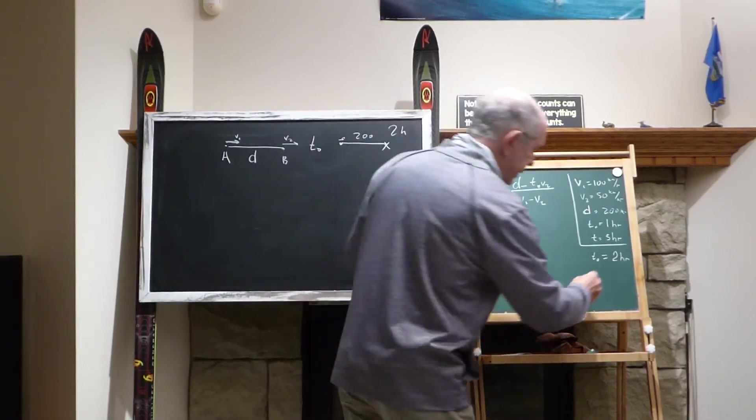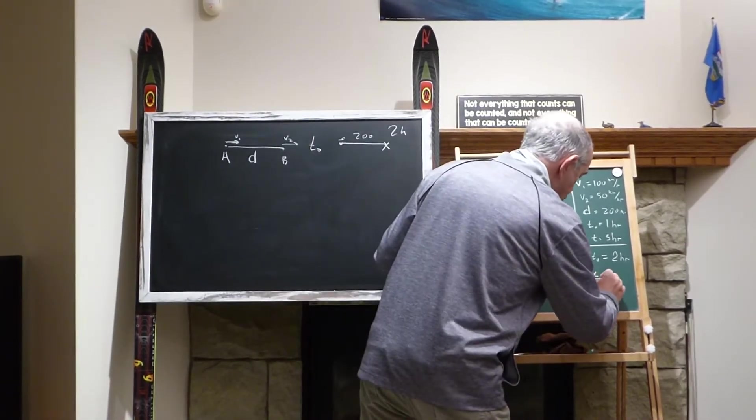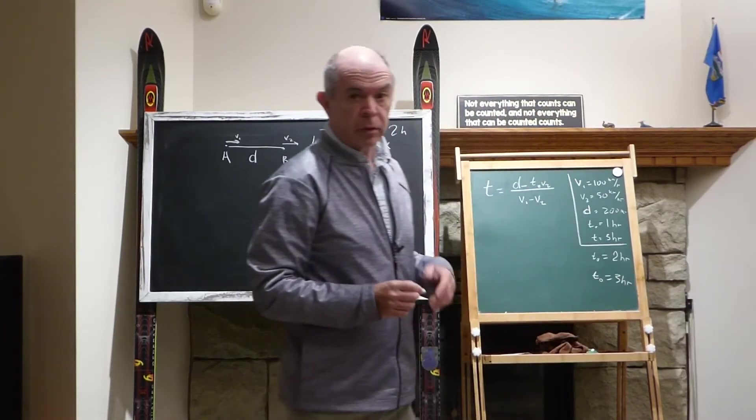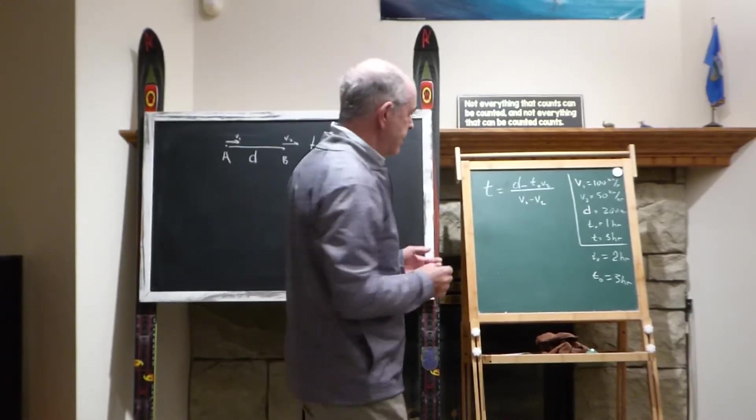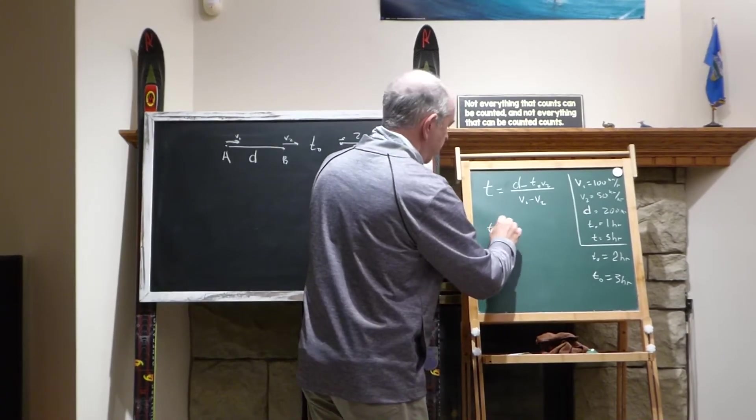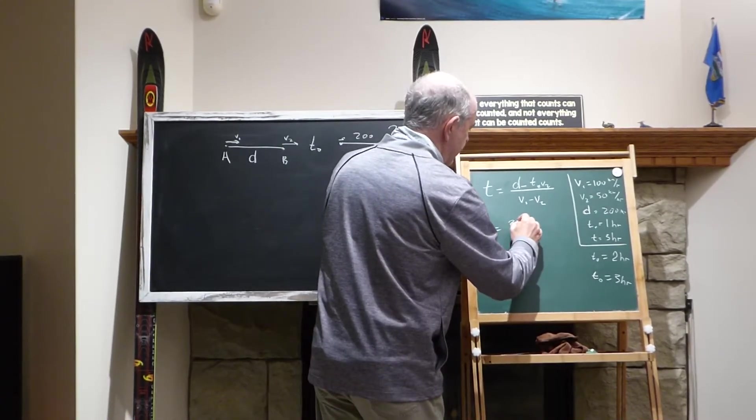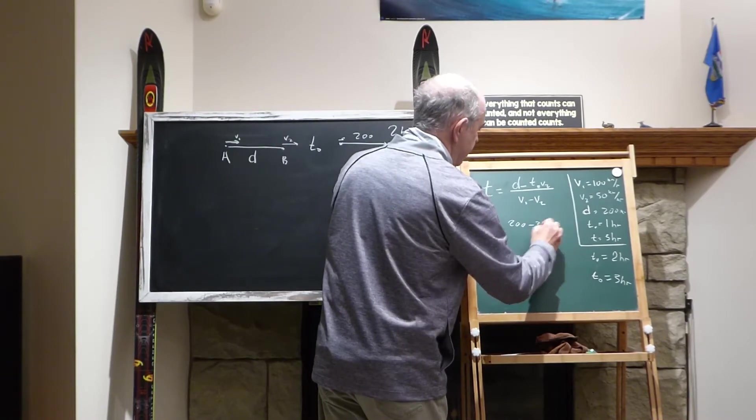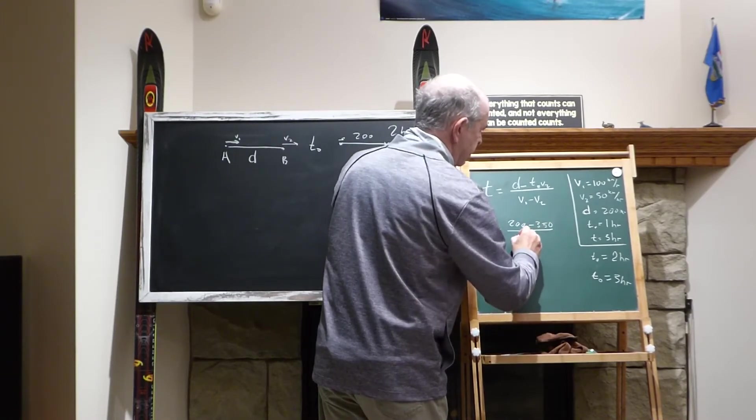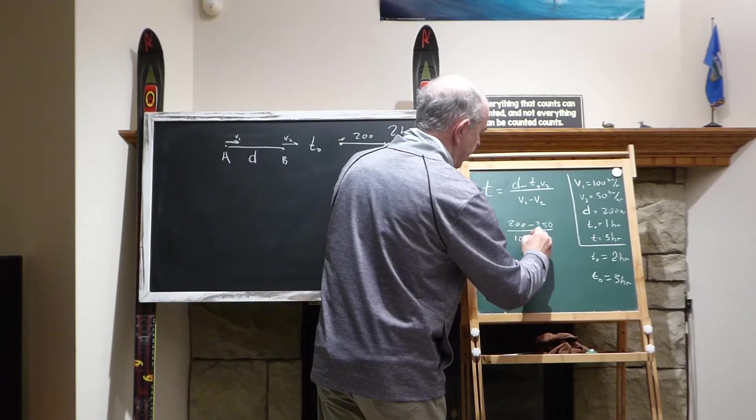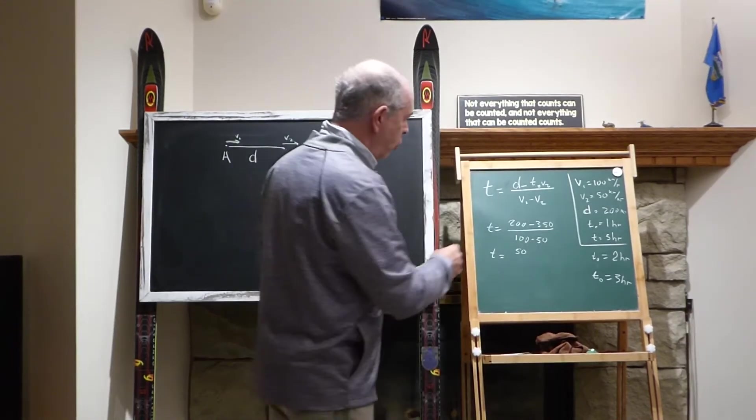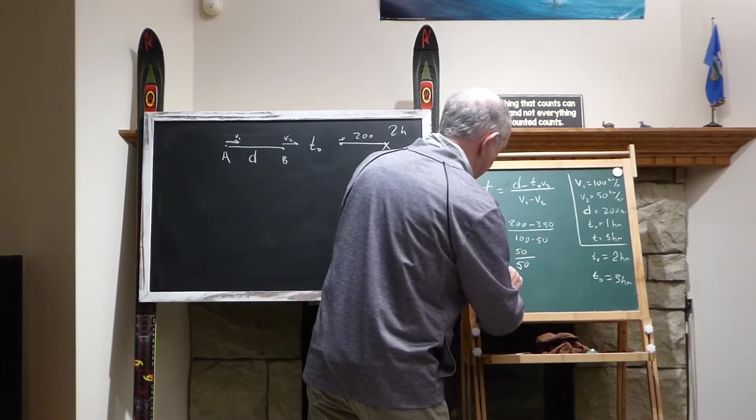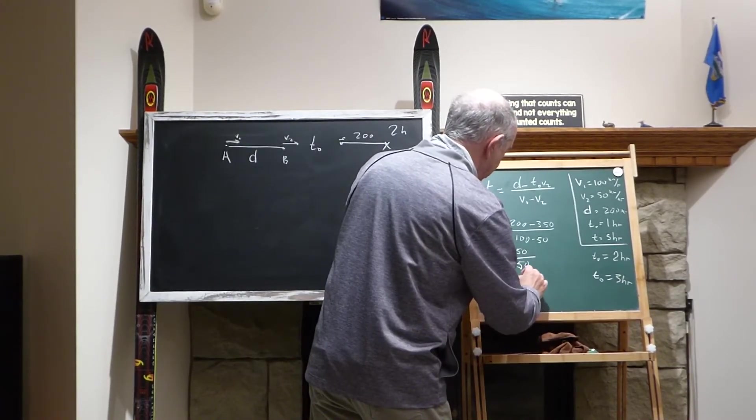Let's, for example, say that T0 equals three hours. If it would be three hours, then T will become 200 minus 3 multiplied by 50, and this would be still 100 minus 50. So this would be 50 divided over 50, and T will become one hour.